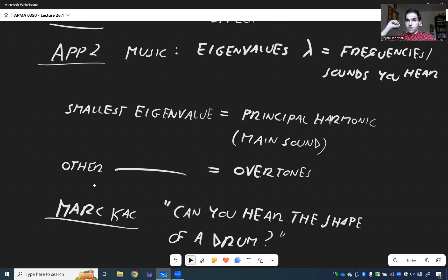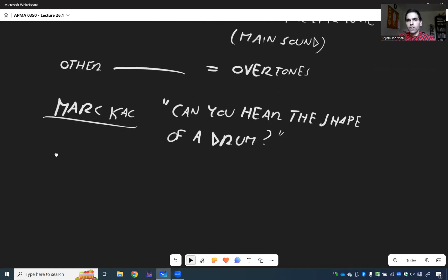In other words, suppose you're in one room and your friend plays a drum in the other room, and you only hear the sounds of that drum. Can you tell me what the drum looks like? Can you tell me what the geometric shape of a drum is?